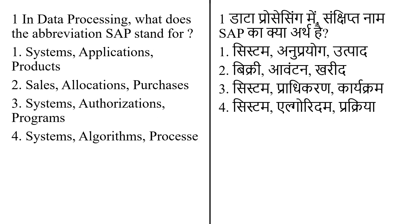In data processing, what does the abbreviation SAP stand for? The options are: (1) Systems Applications Products, (2) Sales Allocations Purchases, (3) Systems Authorizations Programs, and (4) Systems Algorithms Process.